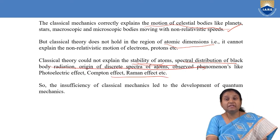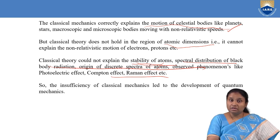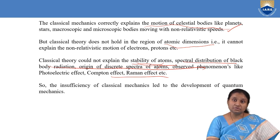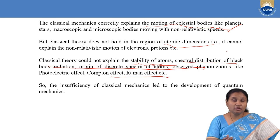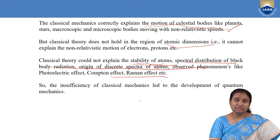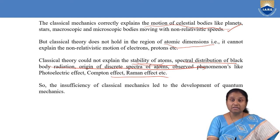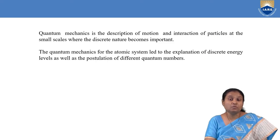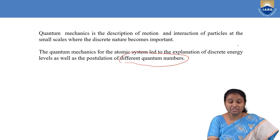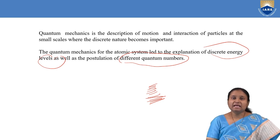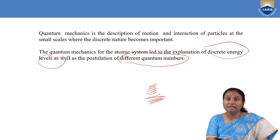We cannot explain stability of atoms or why a black body, when heated, emits spectral distributions of radiation at different frequencies and wavelengths. We cannot explain phenomena like the photoelectric effect and Compton effect using classical theory. This insufficiency of classical mechanics led to the development of quantum mechanics. The first concept in quantum mechanics is quantum numbers, where atomic systems are explained based on different quantum numbers that give rise to discrete energy levels.